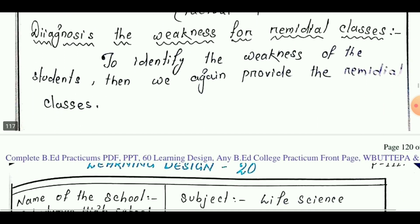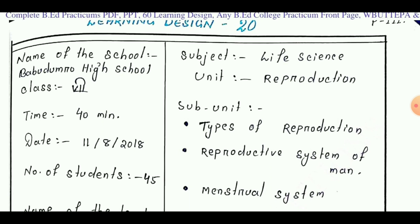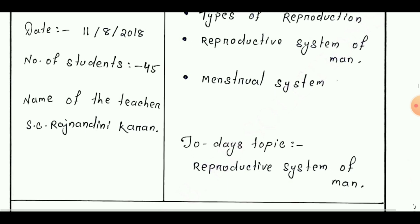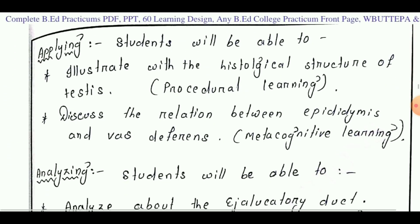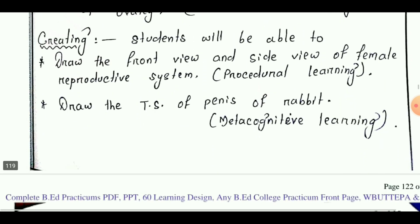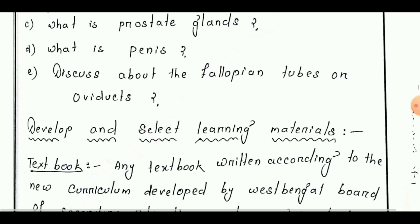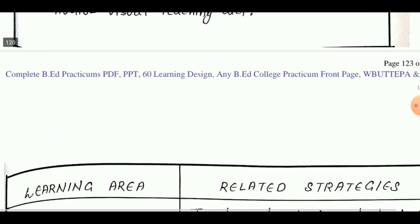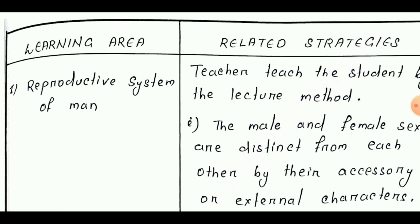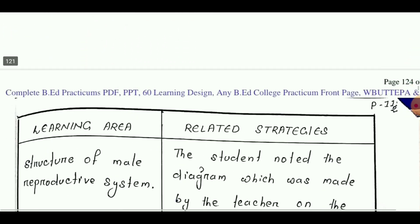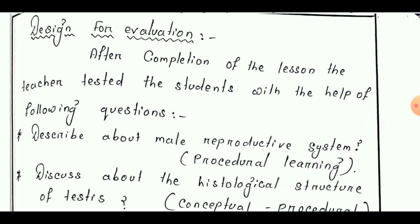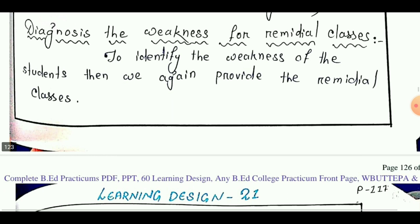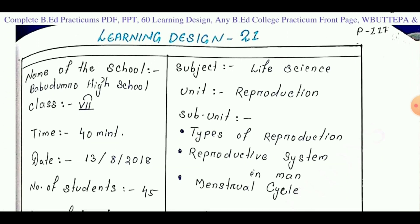Learning design number 20 is taken from Class 7. Today's lesson is 'Reproductive System of Man.' The learning goals are: remembering, understanding, applying, analyzing, evaluating, and creating. Next is analyze learner and concept, then develop and select learning materials. Next is learning area and related strategies. Design for evaluation includes simulation, and the last point is diagnosing the weakness for remedial class.